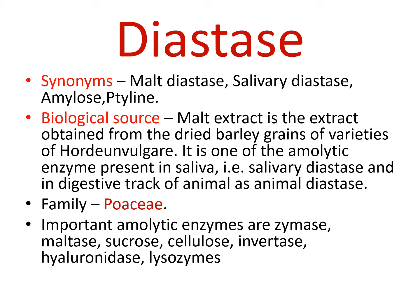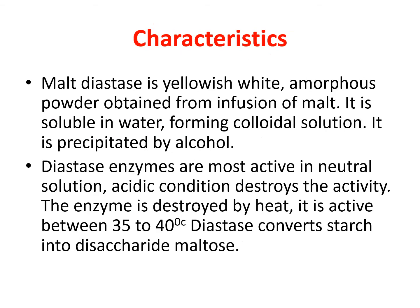The family is Poaceae. Important amylolytic enzymes are zymase, maltase, sucrase, salivary diastase, invertase, hyaluronidase, and lysozyme. The important characteristics of malt diastase: it is a yellowish-white amorphous powder obtained from infusion of malt. It is soluble in water, forming a colloidal solution, and is precipitated by alcohol. Diastase enzymes are most active in neutral solution. Acidic conditions destroy the activity of diastase, and the enzyme is also destroyed by heat. It is active between 35 to 40 degrees centigrade.